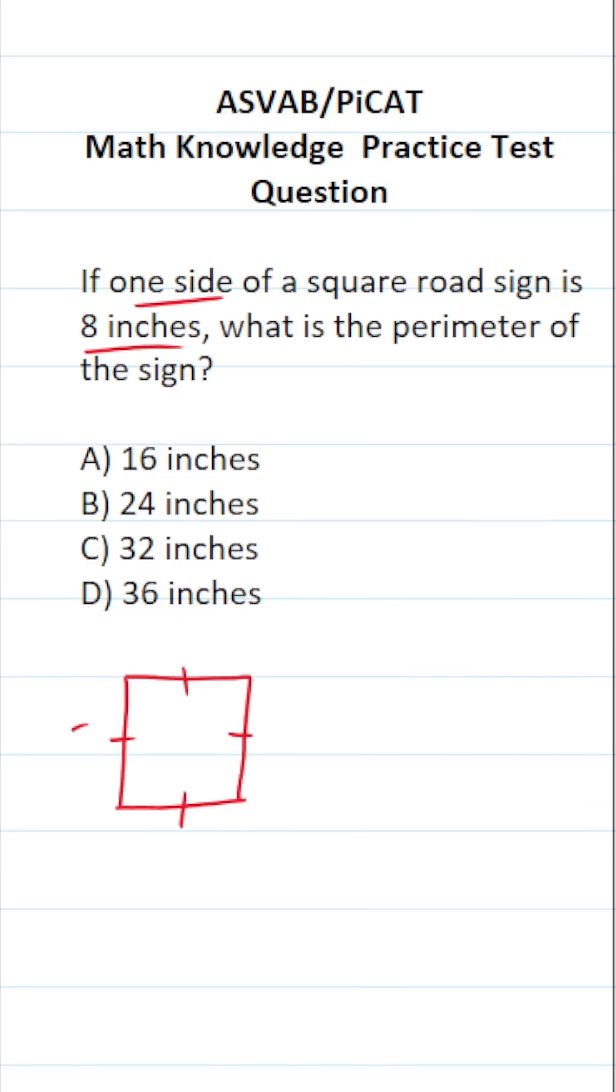So if one side of our square is 8 inches, all these other sides are also going to be 8 inches.